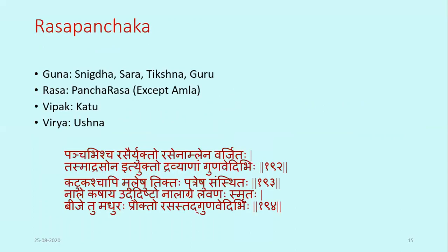Regarding Rasa Panchat, its Guna is Snigdha, Chara, Tikshna, and Guru. It has Pancha Rasa with the absence of Amla Rasa. The various parts of this plant contain different Rasas — different Rasas are present in different parts, as written in Bhavaprakash Nighantu and Kashyap Nighantu. Its Vipaka is Katu and Virya is Ushna.